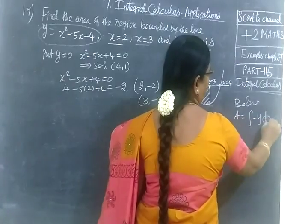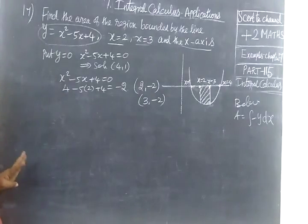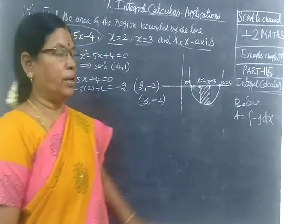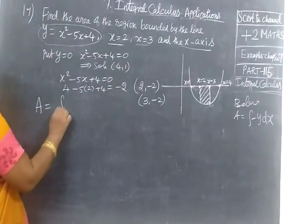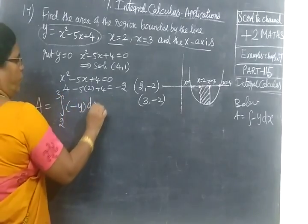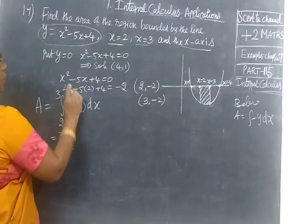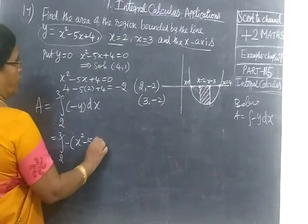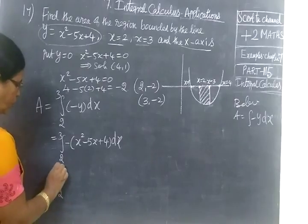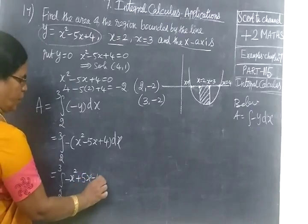The area is the integral of minus y dx, since the curve is below the x-axis. Above means plus y dx, below means minus y dx. So the limit from 2 to 3: minus y dx equals the limit 2 to 3 minus of y, where y equals x squared minus 5x plus 4 dx.